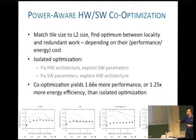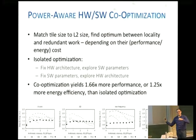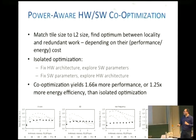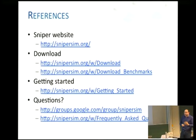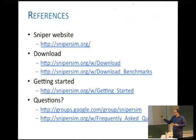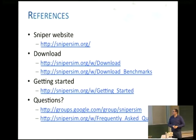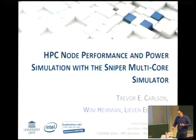To summarize: if you do co-optimization of hardware and software together, you can do better than optimizing just software or just hardware alone. Sniper is available to download today. We have a pretty easy way to get you started, and we have a fairly active mailing list where we try to respond quickly. I'd love to answer any questions.